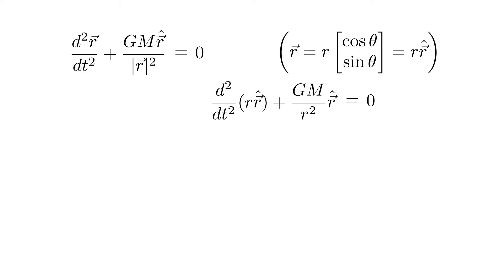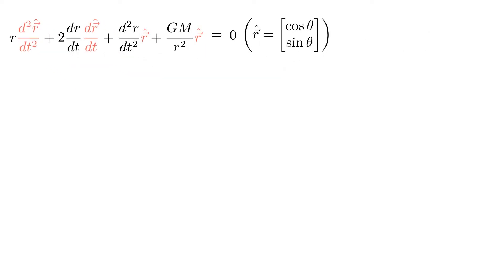Then we can apply the product rule twice and obtain this expression. There are several vectors in this expression: the second derivative of r hat, the derivative of r hat, and r hat. Let's compute these vectors explicitly.